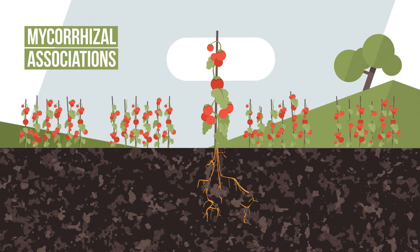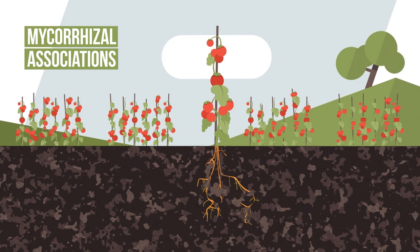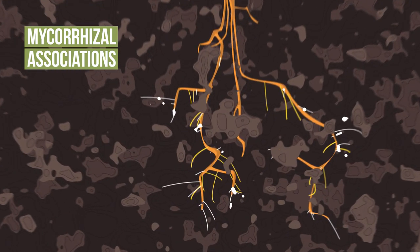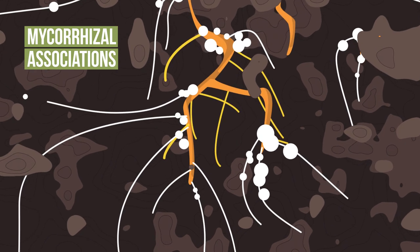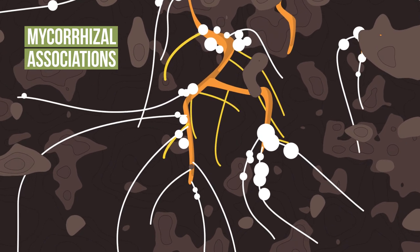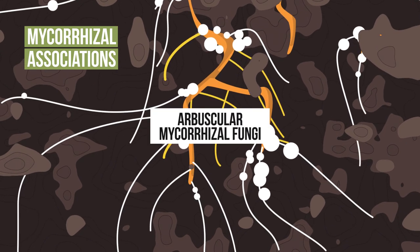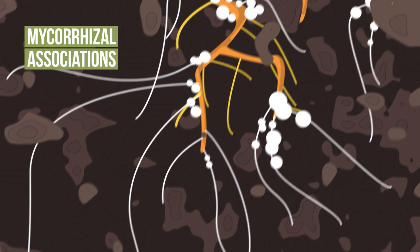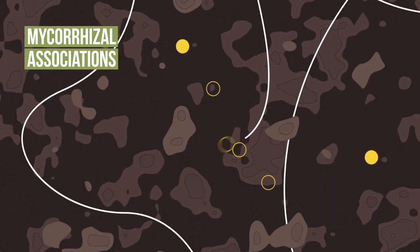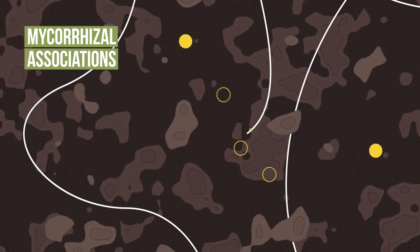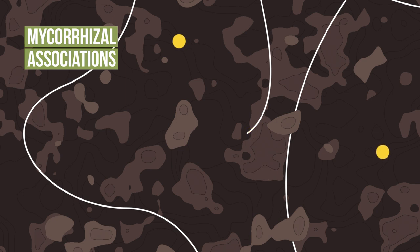Mycorrhizal fungi are present in all soils and their abundance depends on the type of plant present. The major types of mycorrhizas in agricultural soils are arbuscular mycorrhizal fungi. Hyphae associated with them can help the plant explore the soil for nutrients, especially phosphorus when the amount of phosphorus is insufficient to meet the needs of the plant.